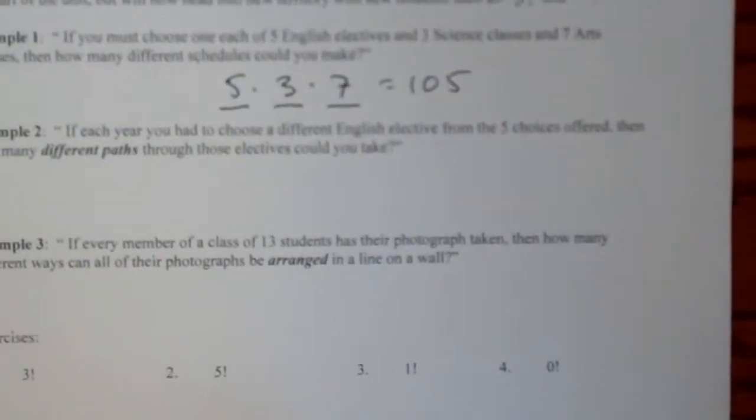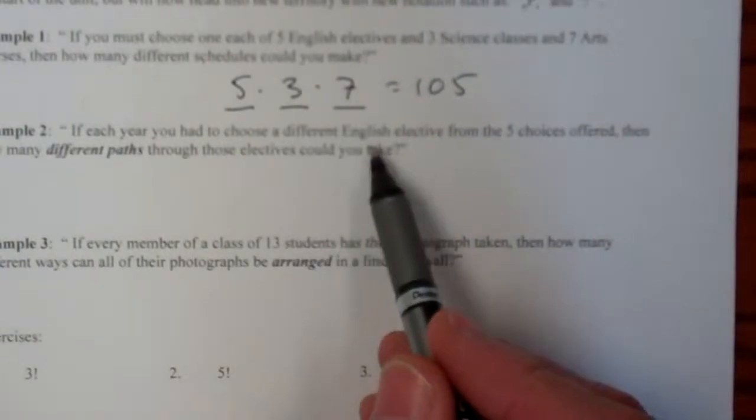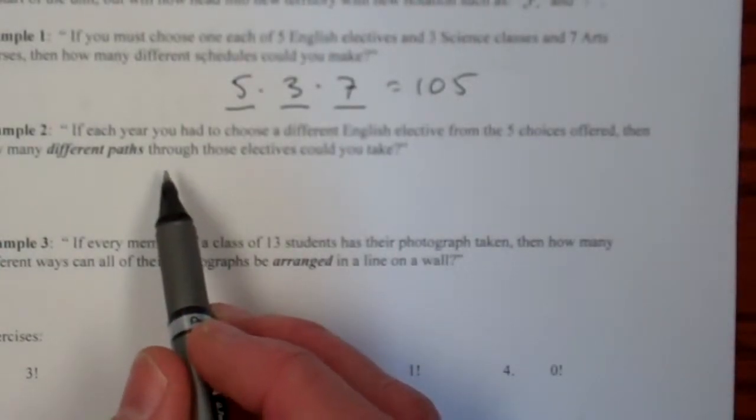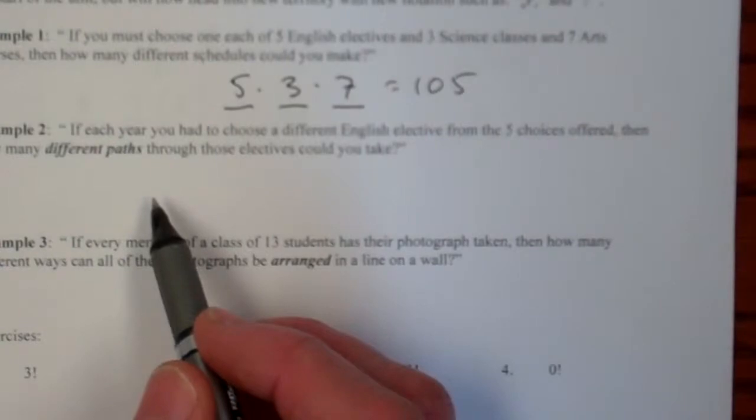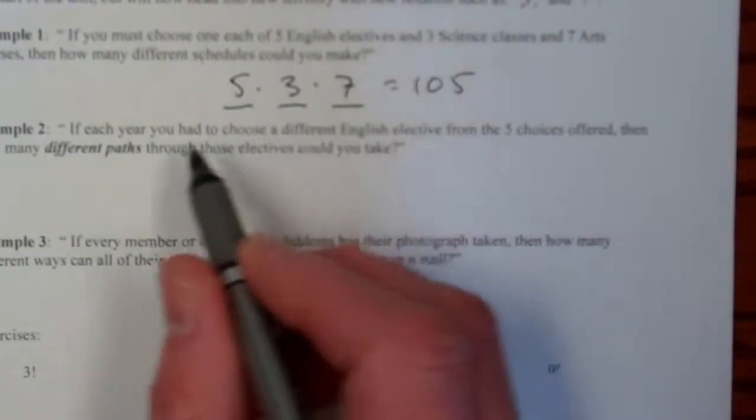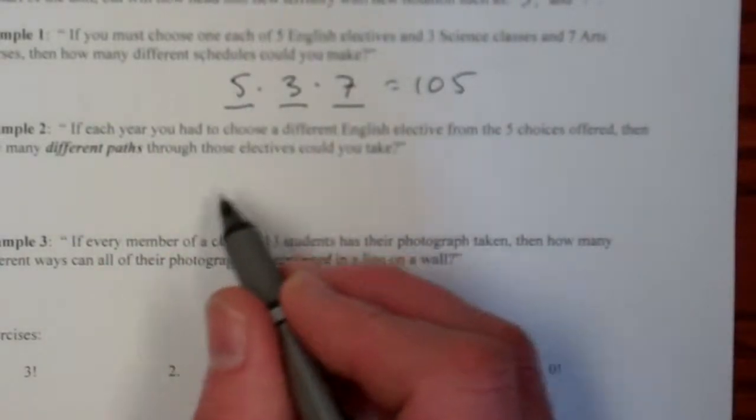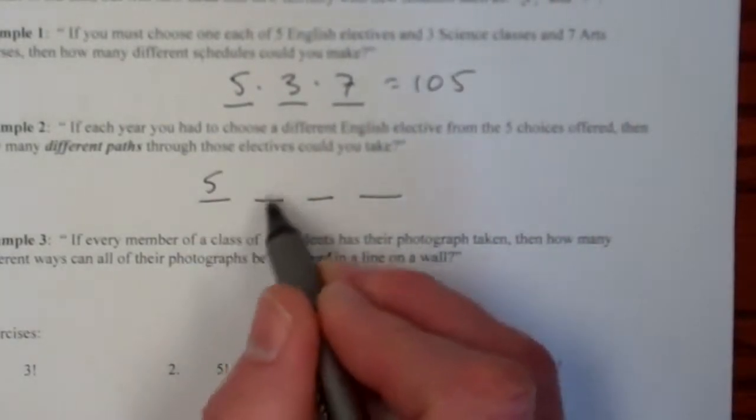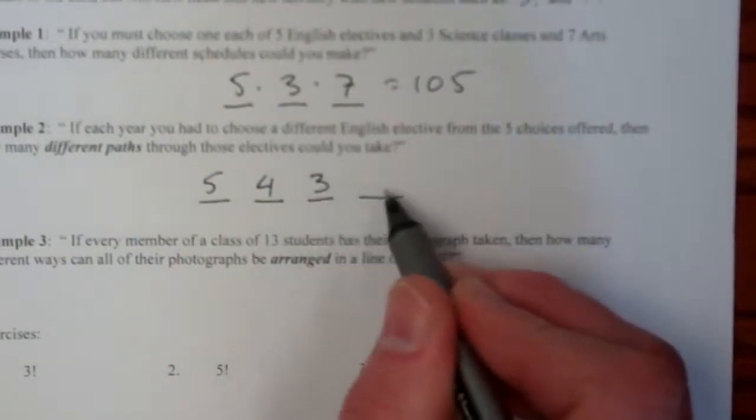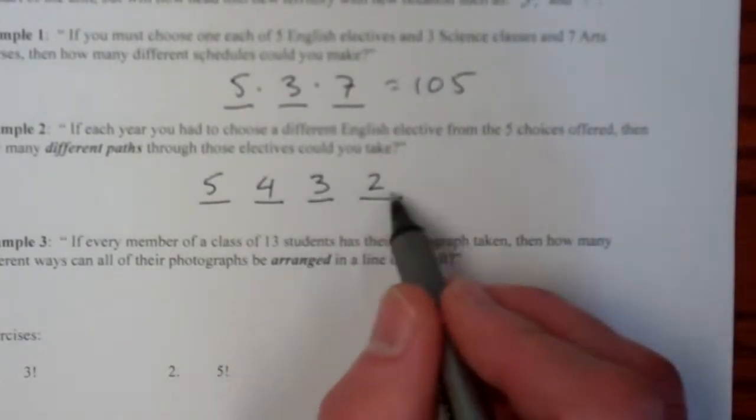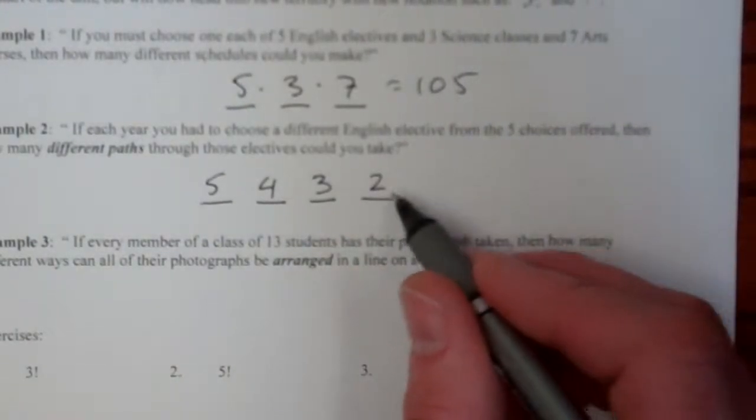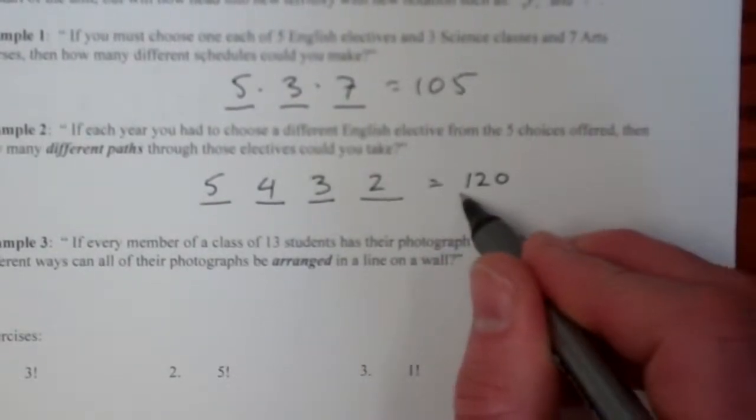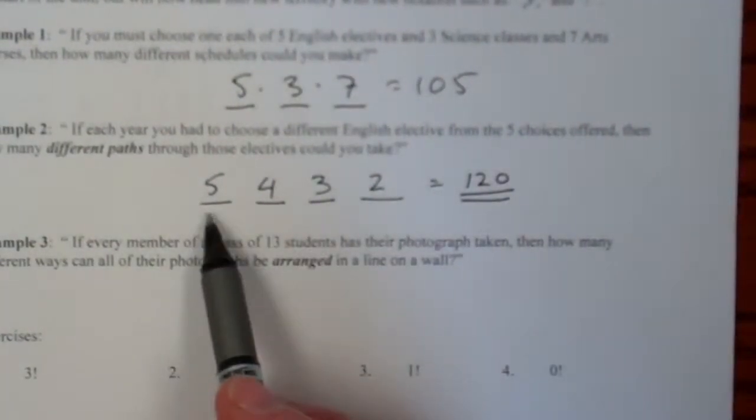So if each year you have to choose a different English elective from the five choices offered, then how many different paths through the electives could you take? So you have four years in high school, and you've got those five English electives, so I could choose anything from the five in the first year, then four in the second, then three my junior year, and two my senior year. So that's going to be twenty times five would be sixty. Times five is a hundred and twenty, rather. So I'd have a hundred and twenty different paths through the options in the English department.